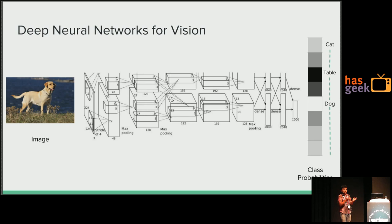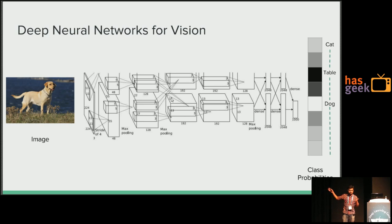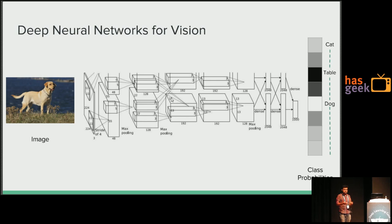One nasty surprise you'll come across is that it's very difficult to port these things onto small devices like mobile phones. The reason is very simple: this machine sitting in the middle is very, very large. If the model is very large, it takes up a lot of memory and a lot of time to do inference. Inference is the process of feed-forwarding the image through the network, so inference time will be very large and memory taken by the network will also be very large.